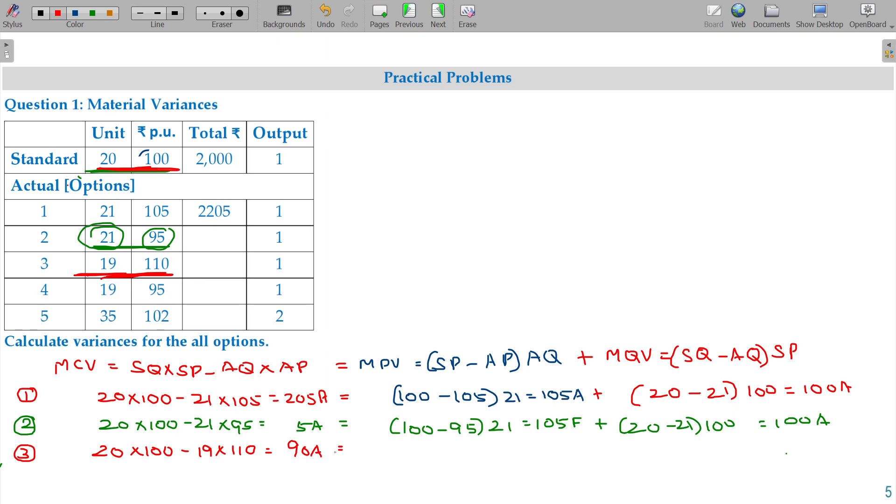In the adverse corner price or quantity, let us see here. When it comes for the price variance, 110 is the actual cost rather than 100 rupees. 100 rupees spend, 110, 10 rupees excess has spent for how many units? Actual units, 19, 190 adverse. Then when it comes for the quantity variance, you consume one unit lesser. 20 consume, 19 consume. For that, standard price being 100, 100 rupees favorable. 100 rupees favorable, 190 adverse ends with 90 adverse here.